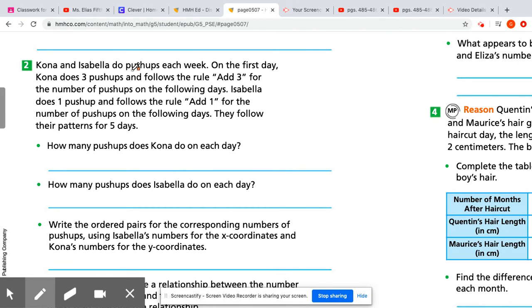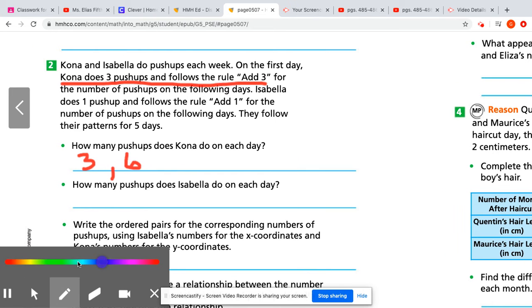So it's just Kona and Isabella. They're doing push-ups. Our important part is that Kona does three push-ups and follows an add-three rule. So if she's at three the first time, the next day she's going to add three more. So three plus three is six. And then you're going to continue her pattern for five more days. So I just did days one and two. You're going to continue for five more days.